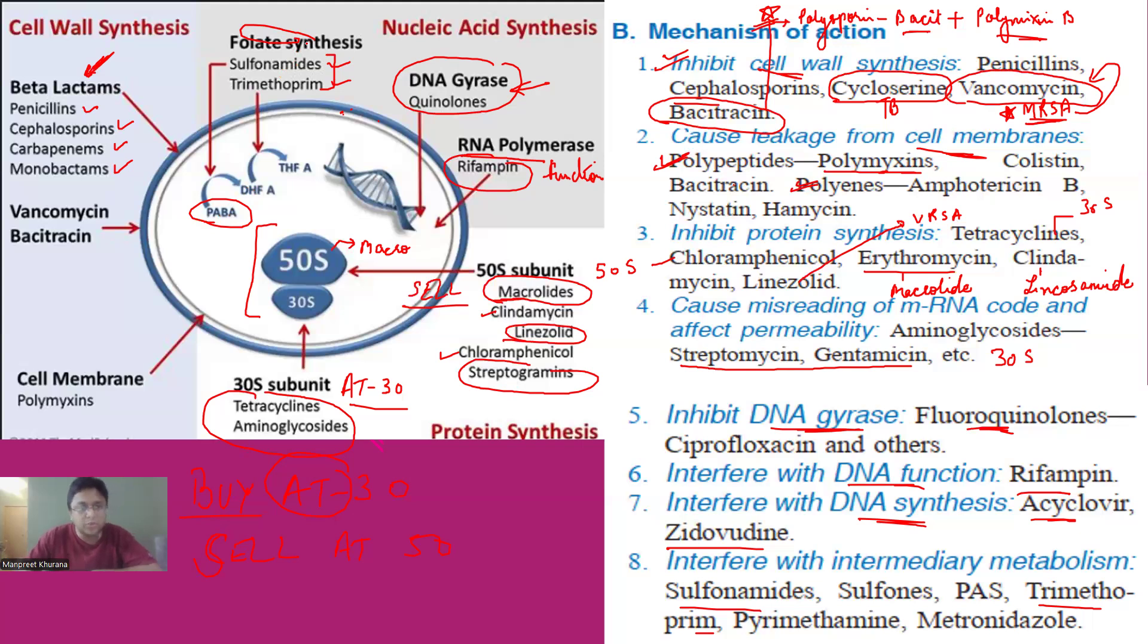So we can say that almost with this one diagram, we can learn all the antibiotics with their mechanism of action. Now let me go for a review for you all so that you remember in a nutshell. So in a nutshell, let's start with the outside, the cell wall. So cell wall are beta-lactam antibiotics, mainly penicillin, cephalosporin, cycloserine, vancomycin and bacitracin. Vancomycin was methicillin-resistant staph aureus antibiotic. Cycloserine was tubercular drug and bacitracin was used in polysporin. So the cell walls are beta-lactam. Then we have vancomycin, cycloserine, bacitracin.